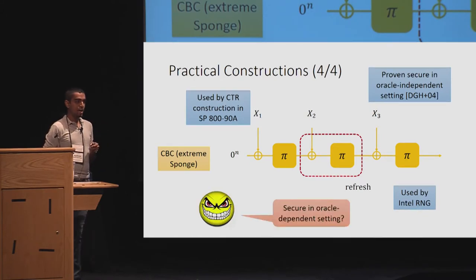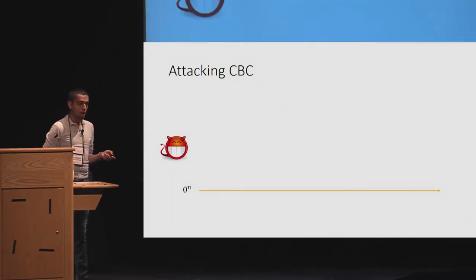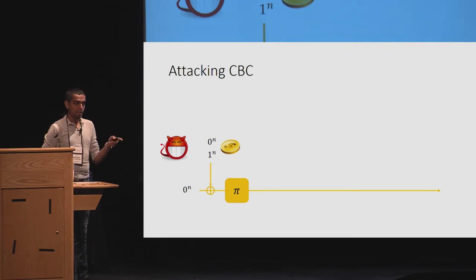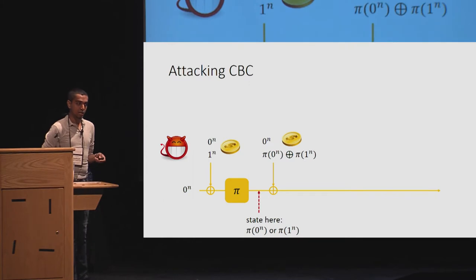The question we have here is, is it secure in the Oracle dependent setting? We might be naive to think it would be true, but we actually show an attack, and it's a beautiful attack, wherein we say, at each step of the process, we provide exactly one bit of entropy. Note that the adversary tosses a coin and chooses between zero and one. The output after the first pi call is pi of zero or pi of one. Then, for the second input, it chooses between zero and pi of zero exorbed with pi of one. The result of this exorbed operation, the input, the result here, for those of you who can do some quick math, is actually the same state.